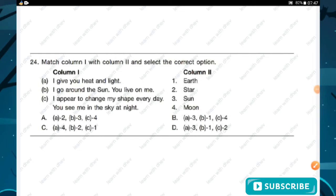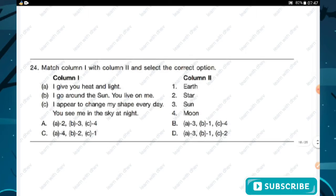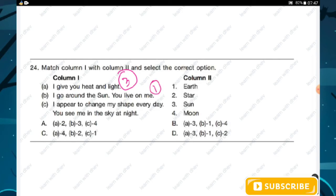Question number twenty-four: match column 1 with column 2. Column 2 options are earth, star, sun, and moon. 'I give you heat and light' matches with sun — answer 3. 'I go around the sun, you live on me' matches with earth — answer 1. 'I appear to change my shape every day, you see me in the sky at night' matches with moon — answer 4. Hence option B is the right answer.